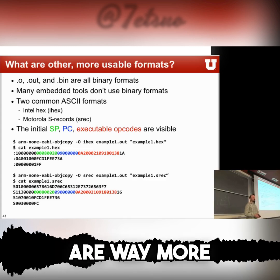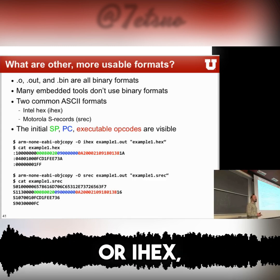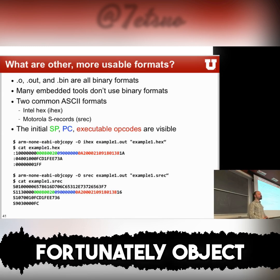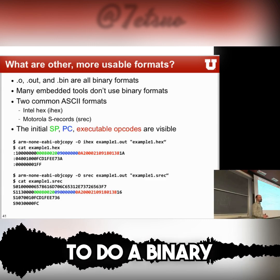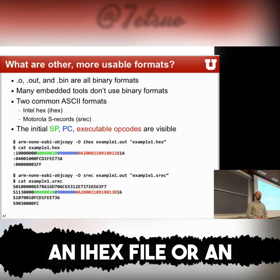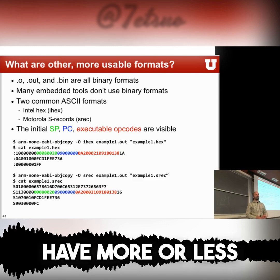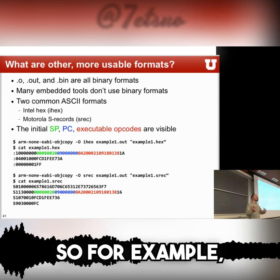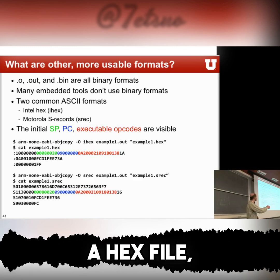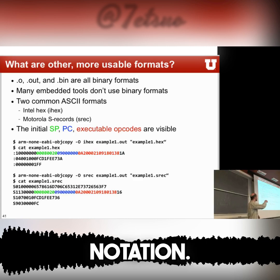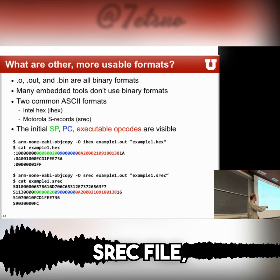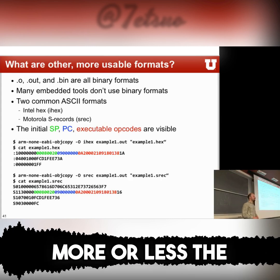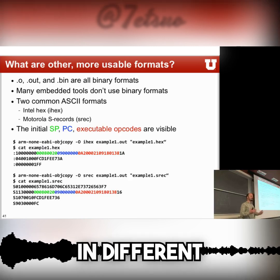There are two other formats that are way more common than raw binary. That's the Intel hex format (Ihex) and the Motorola S-records. Fortunately, objdump can produce both of them — you can tell it to do a binary file, an Ihex file, or an S-record file. They all have more or less the same content, except some are ASCII and others are pure binary files. If you generate a hex file, the content looks something like this with a different notation; if you use an SREC file, the stream is just encoded differently.